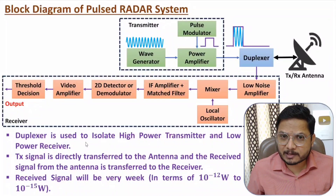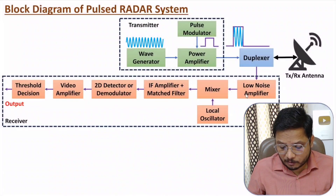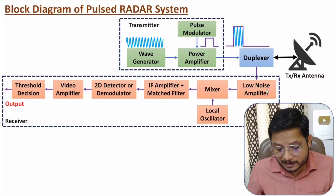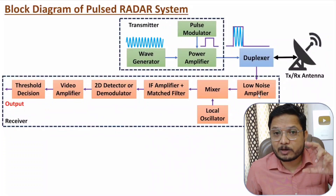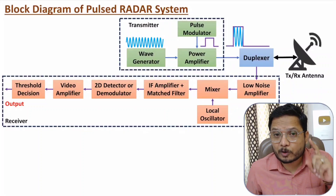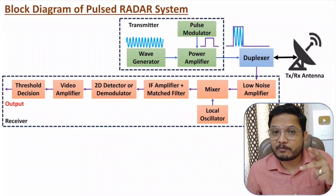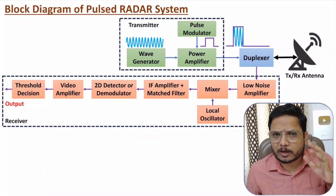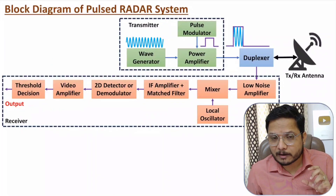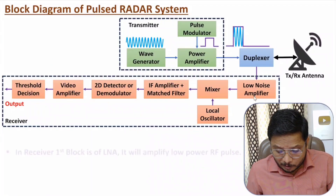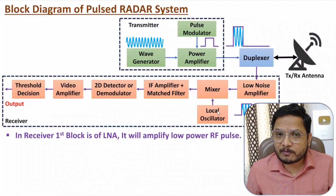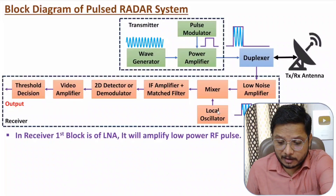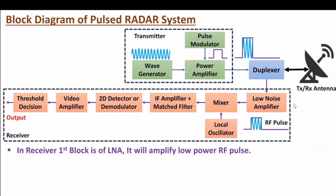Now I'll explain the receiver section. In the receiver section, the first block is the low noise amplifier. As mentioned, we receive a very weak signal — in terms of 10 to the power of minus 12 to 10 to the power of minus 15 watts. So first we need to amplify that very weak signal without adding any noise. The low noise amplifier has the characteristic of amplifying the signal only, without adding much noise, since the signal is very weak.